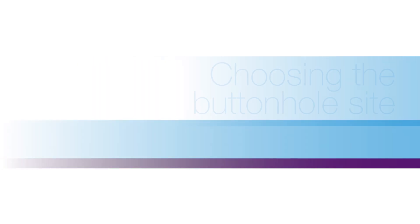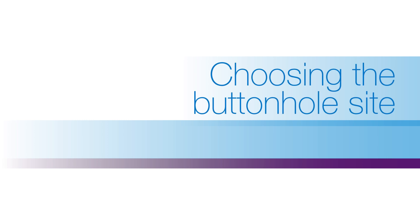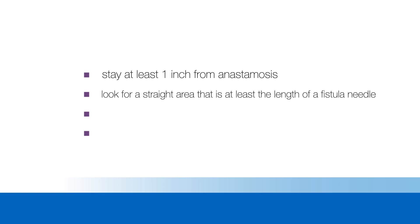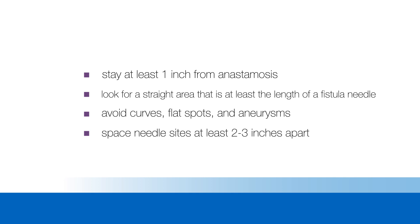When choosing the buttonhole sites, remember these important tips: Stay at least one inch from anastomosis. Look for a straight area that is at least the length of a fistula needle. Avoid curves, flat spots, and aneurysms. Space needle sites at least two to three inches apart. The direction of needle insertion depends on which direction delivers the best flow and who will be the cannulator. Considering that the patient may be the cannulator, the site should be easily accessible for them.